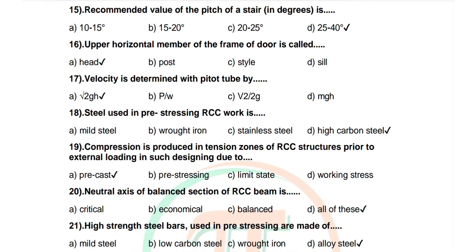Question 17: Velocity is determined with a pitot tube by which formula? Options: V = √(2gh), p over w, w v² over 2g, mgh. Correct answer is V = √(2gh).